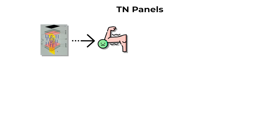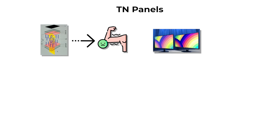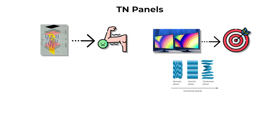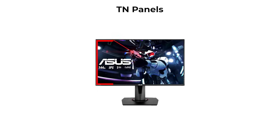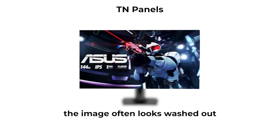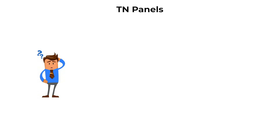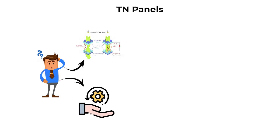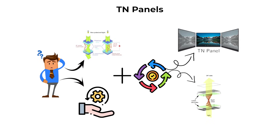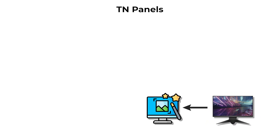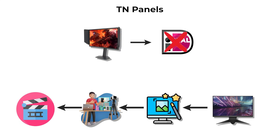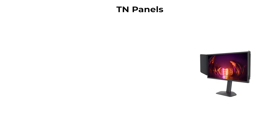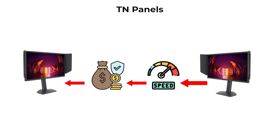However, TN panels have notable weaknesses. They produce the weakest color accuracy of the three main liquid crystal display panel types, and their viewing angles are very limited. If you look at a TN screen from the side or from above, the image often looks washed out or distorted. This is because the twisting liquid crystals cannot maintain consistent light output across wide angles. For tasks like photo editing, video production, or even watching movies, TN panels are not ideal. They are best chosen only when speed and budget are the top priorities.